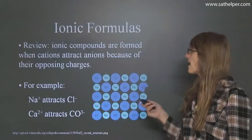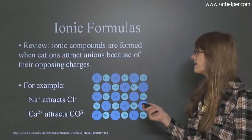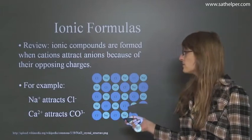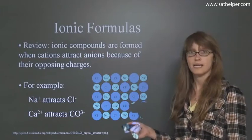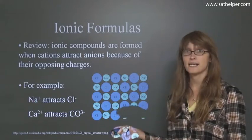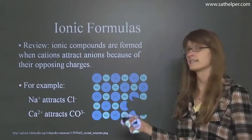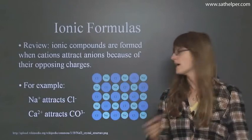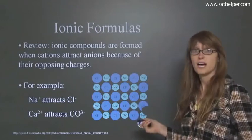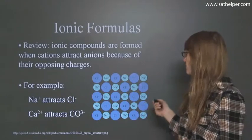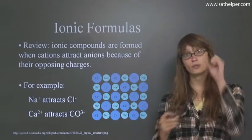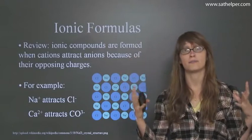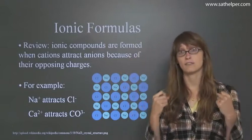For review, ionic compounds are formed when cations attract anions because of their opposing charges. So sodium loses an electron and becomes Na+. Chlorine gains an electron and becomes Cl-. And this plus charge and this minus charge attract each other. And they become a salt. They become an ionic compound. And there's a crystal lattice formed where you have chlorine, sodium, chlorine, sodium. And it becomes this big molecule, this big crystal of positive and negative charge.